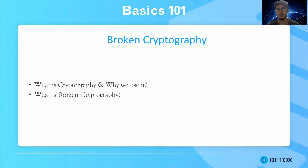Cryptography is basically a practice to perform secure communication between two parties so that no malicious actor or third party can eavesdrop into their communication and get hold of the sensitive data that is being passed between the two or multiple parties involved. There are various kinds of encoding and encryption methodologies available, but there are certain encryption methods or encodings which are not actually considered to be secure.